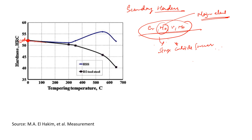In steels like D2 tool steel, which does not contain much chromium or molybdenum, the hardness keeps on decreasing with tempering temperature. But in the case of HSS — high speed steel — after a tempering temperature of around 400–500°C, the hardness actually increases.